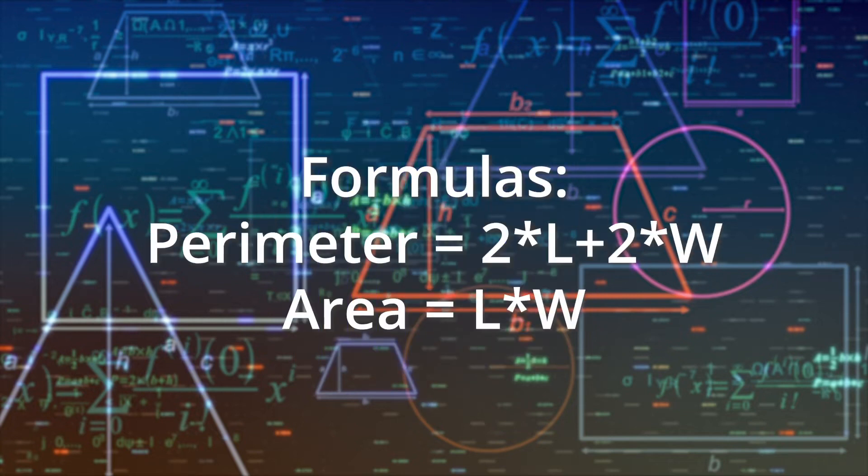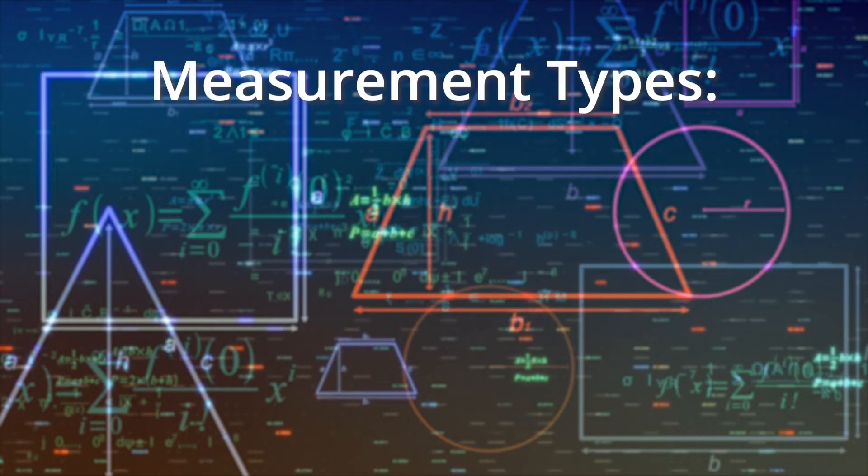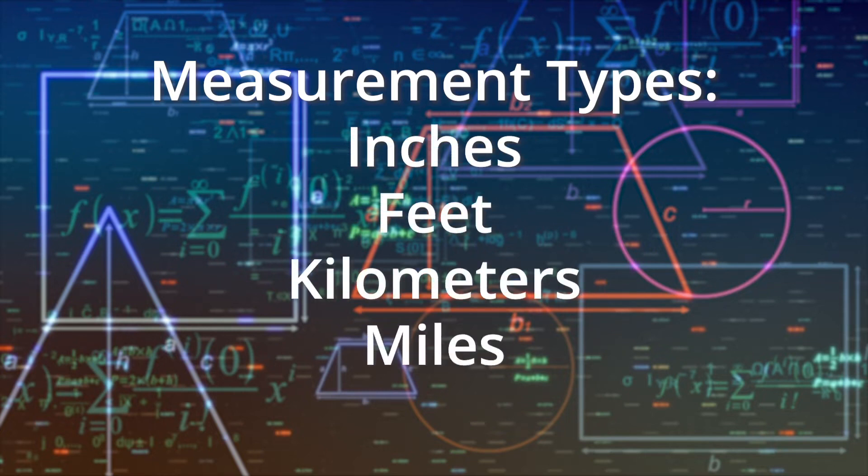Perimeter and area are pretty easy once you learn the formulas. Because it's important to remember that the measurements of perimeter and area can be in inches, feet, kilometers, or miles, depending on whatever units you're using.